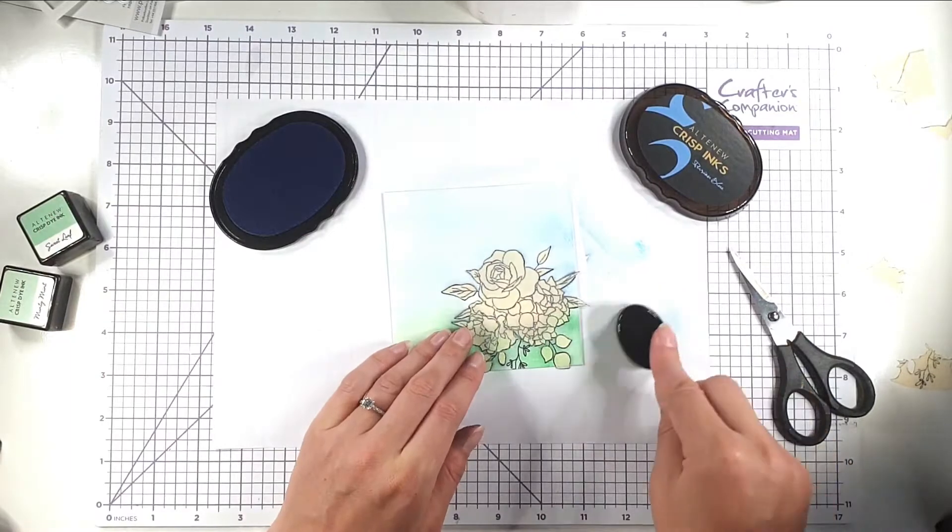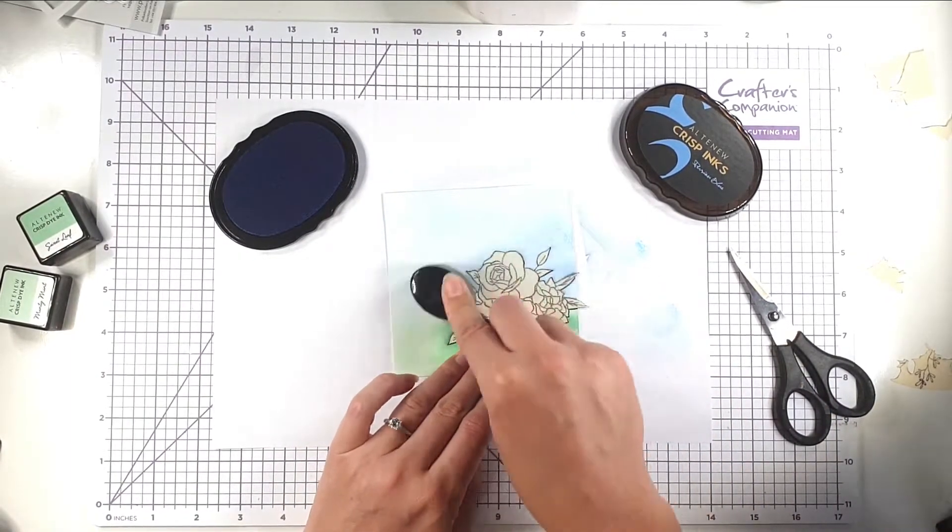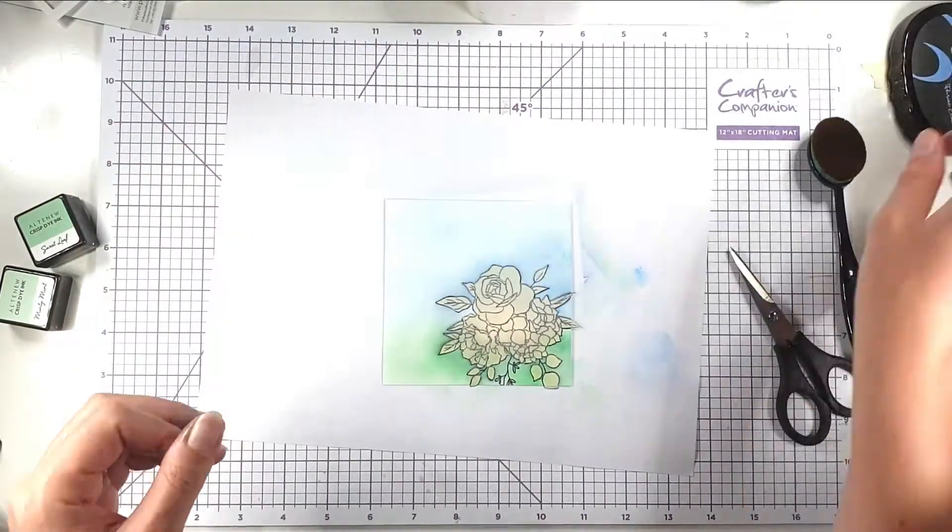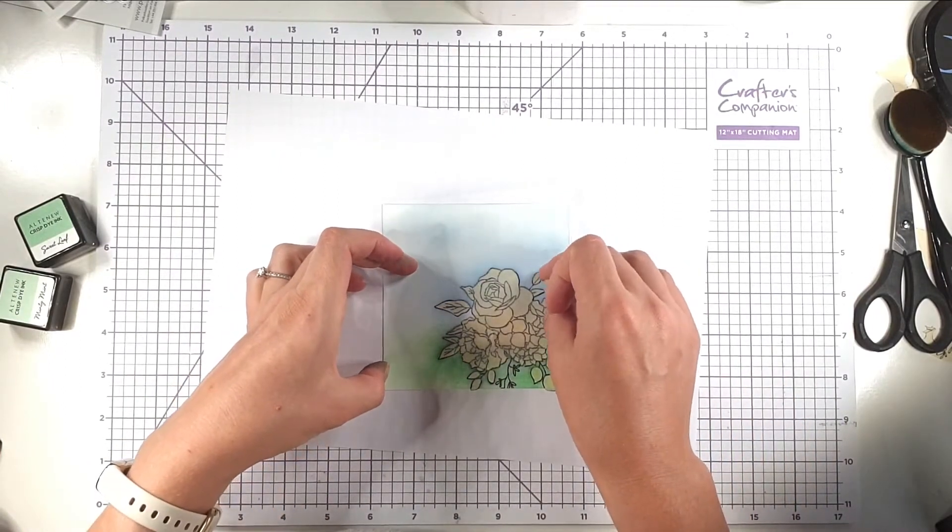And then I'm going to come in with the Persian blue, and this is much darker, so I'm just going to blend this just around the flower and it'll just help make that flower pop in. So then I'm done with the blending.